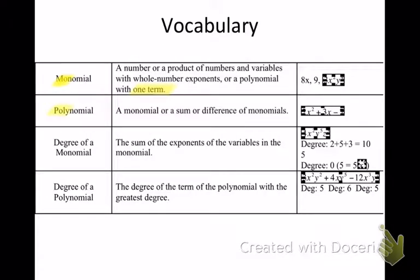Degree of a monomial — we're going to talk about some degrees today. Degree is the sum of the exponents of the variables in the monomial, so degree is the exponents. And then the degree of a polynomial is the degree of the term with the greatest degree — basically the greatest exponent. So we're going to find some degrees of polynomials; we're looking for the one with the greatest exponent.